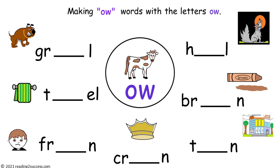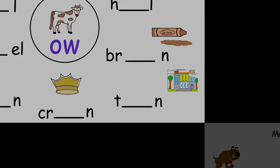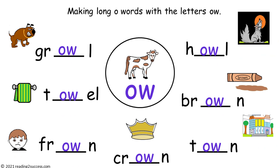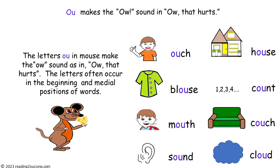Now have kids make O-W words that have the ow sound. This is a completed example — the words are howl, brown, town, crown, frown, towel, and growl. Now introduce kids to the ow sound made by the letters O-U, as in: ouch, blouse, mouth, sound, house, count, couch, and cloud.